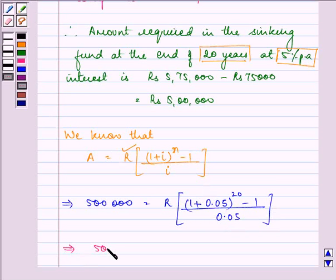This further implies 5,00,000 is equal to R times 1.05 raised to the power 20 minus 1 upon 0.05.